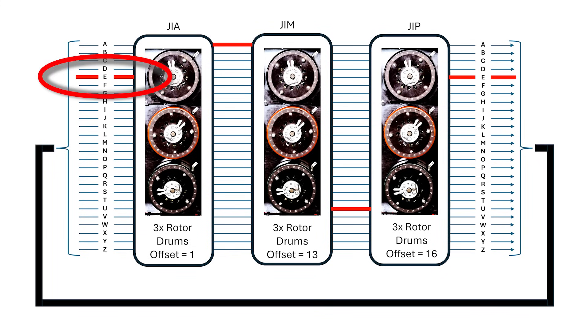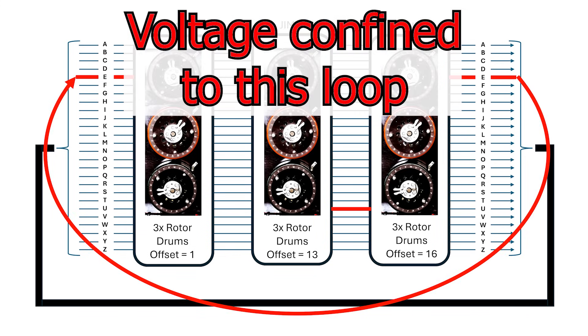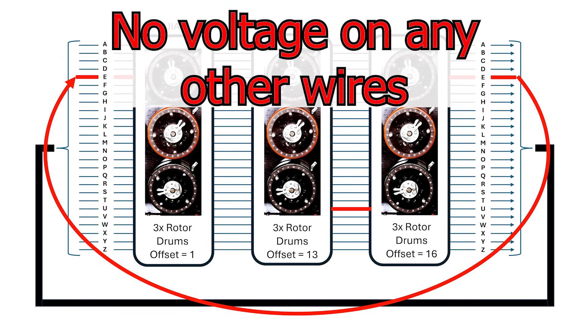If we apply a voltage to E in this key mapping, it'll come out as E, feed back to the input, and the voltage will be contained to this one pathway through the rotors. There should be no detectable voltage on any other wires.